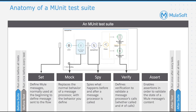Let us see what each one of them offers. The Set event processor allows you to define a Mule event. This message processor is normally used at the beginning of an MUnit test so that you can set the value that you want to send to the flow that is being tested.